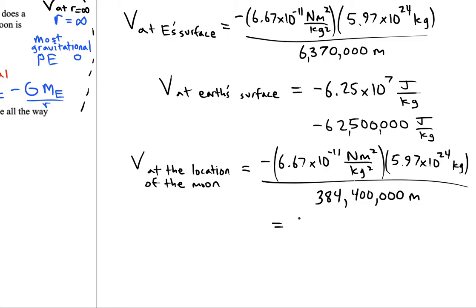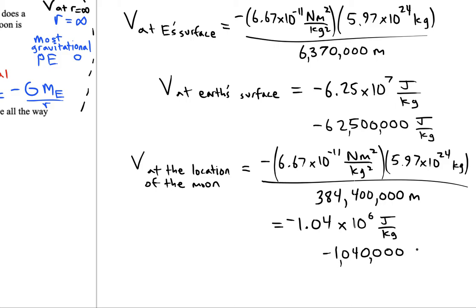The result is negative 1.04×10⁶ joules per kilogram. It's still a fairly large value, but not quite as negative as the potential at Earth's surface. Let's try one more location.